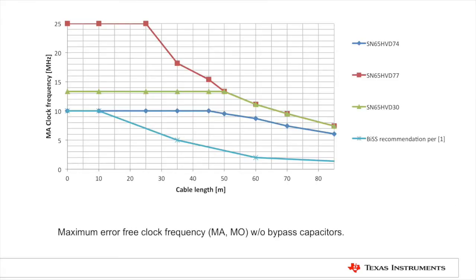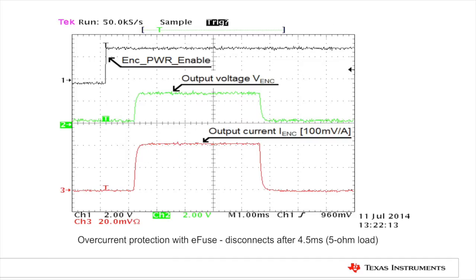Let's now have a look at some test results. The first graph shows the maximum cable length achieved with no bit errors. This test was done with three different TI RS-485 drivers with no bypass capacitors. The second plot shows the protection circuit, which is doing the current limit and then disabling the output when a short circuit occurs.